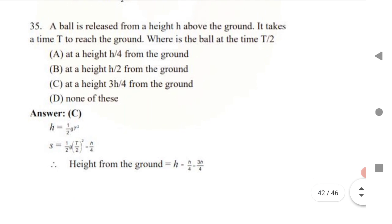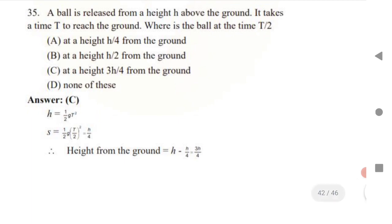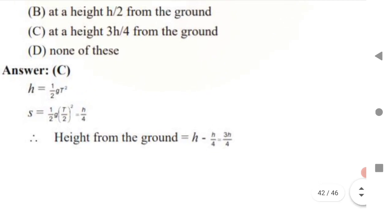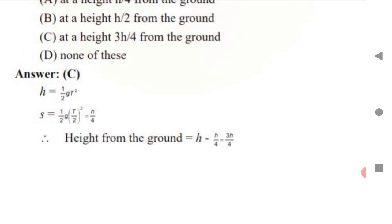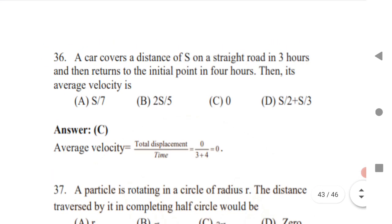Question 35: A ball is released from a height h above the ground. It takes time t to reach the ground. Where is the ball at time t/2? Using h = ½gt², substitute t/2 in place of t to get the distance fallen: s = h/4. So the ball is at height h − h/4 = 3h/4 above the ground. That is the answer.